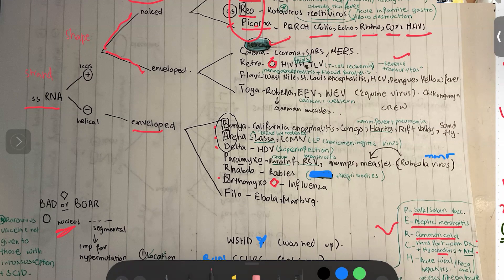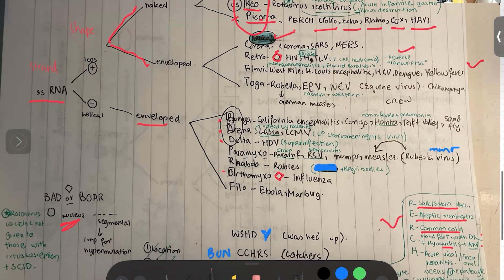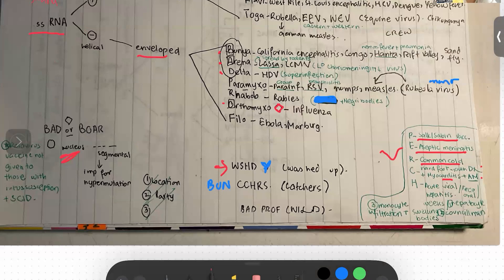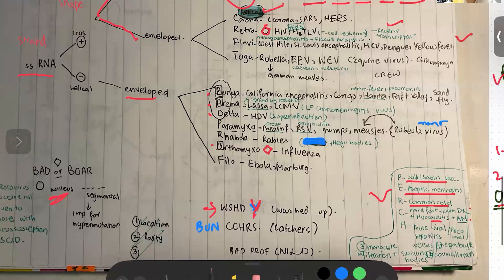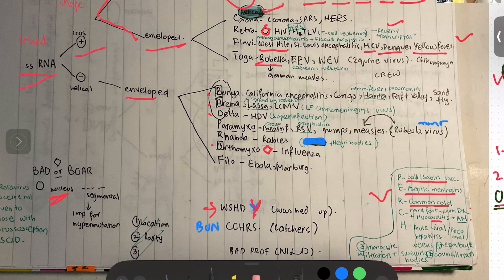The Flavivirus group uses the mnemonic WASHED-BY: W for West Nile virus, S for St. Louis encephalitis, H for HCV, D for Dengue, and Y for Yellow fever. Moving to the Toga viruses — the Rubella virus causes German measles and is a Togavirus. Remember the difference: Rubella is German measles. Reading backwards: it is an enveloped, icosahedral, positive, single-stranded RNA virus. The EE viruses are Eastern and Western equine encephalitis, plus Chikungunya — mnemonic CREWQ.